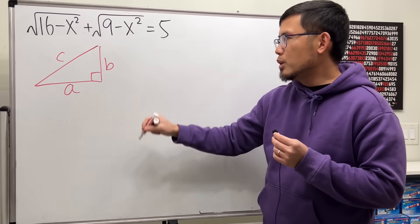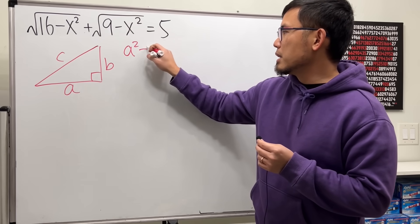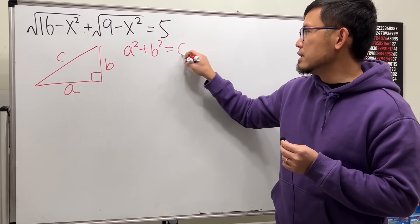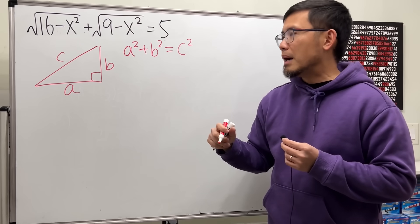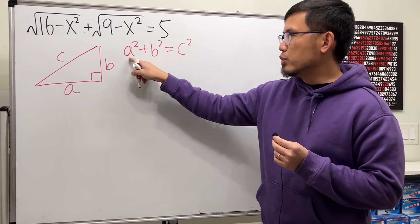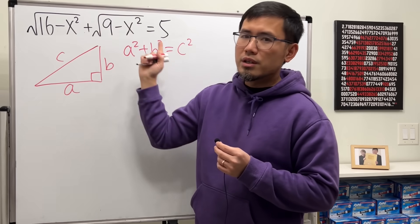By the Pythagorean theorem, we know that a squared plus b squared equals c squared. But I don't want to look at the sum of 2 squares. I want to see a difference of 2 squares.